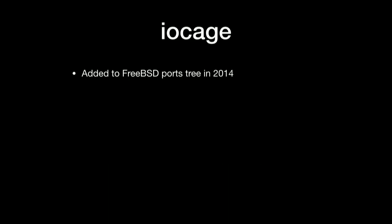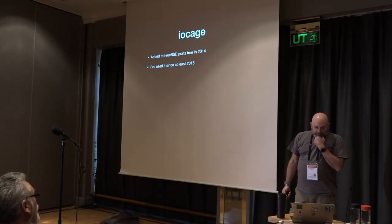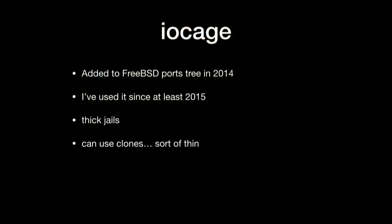Then I found iocage. It was first in the FreeBSD ports tree in 2014, but I didn't start using it until 2015. It uses thick jails, but it can also use clones — though I only use thick jails with iocage. It was originally written as a shell script, which I really liked — it was simple, you could read it, and I could get through it all at once. Now it's written in Python, which isn't a bad thing, but I'm still using it.